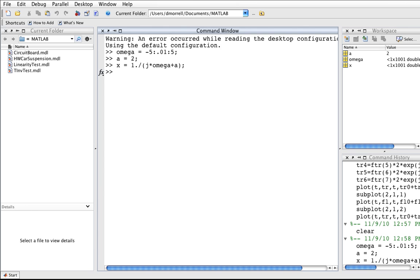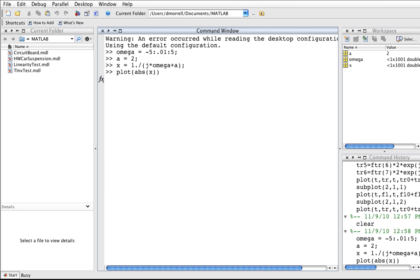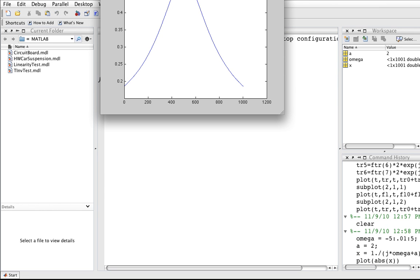So if I've done this correctly, we should now be able to plot the magnitude, and in MATLAB this is abs of x. And there you have it.